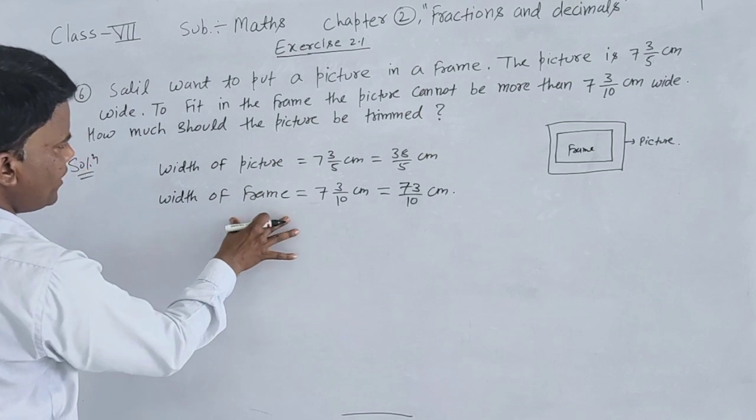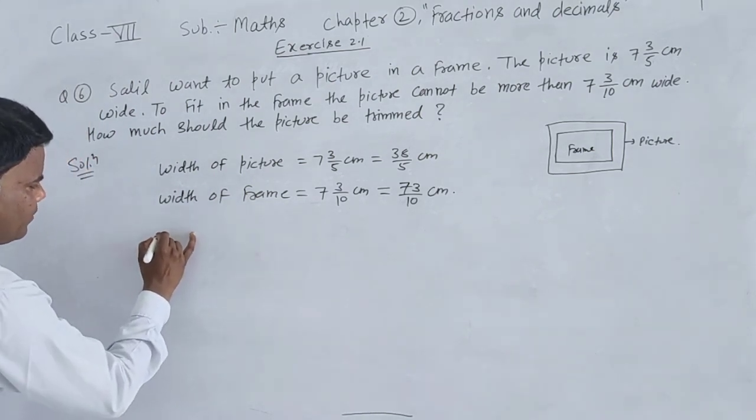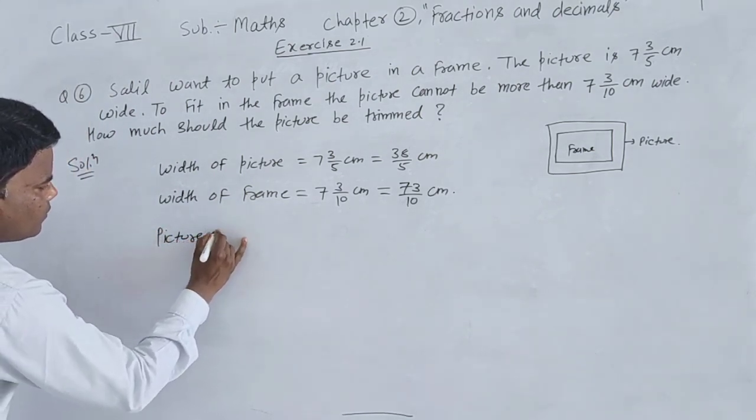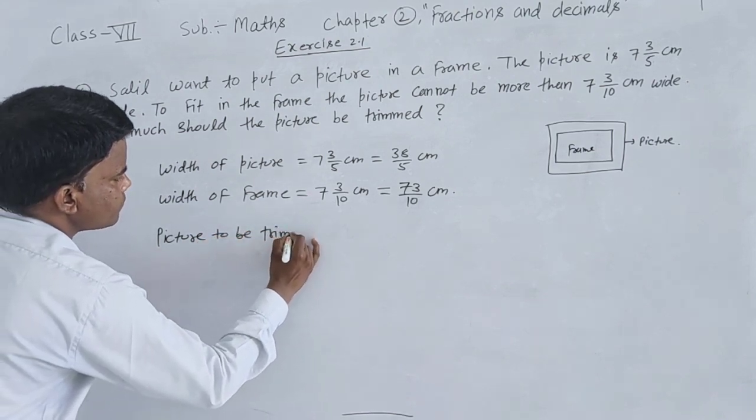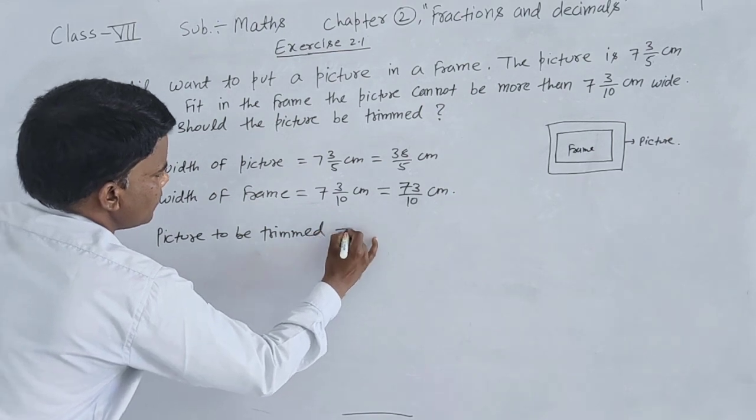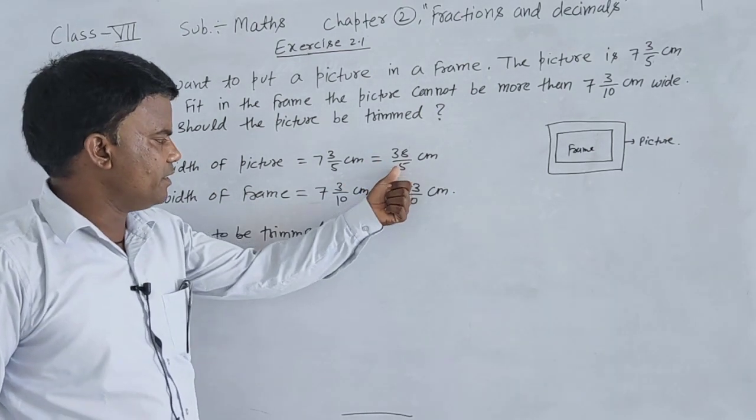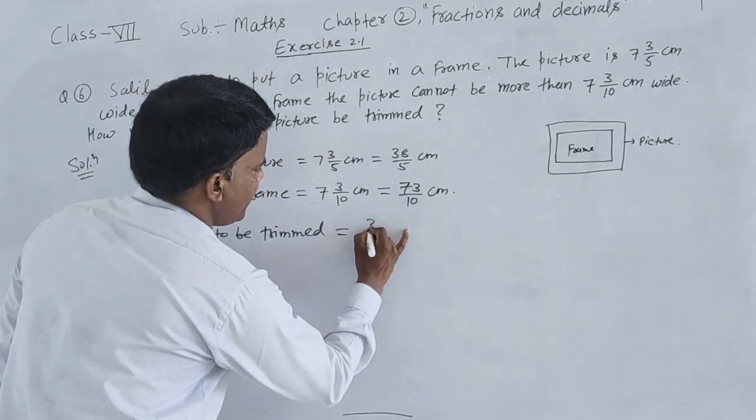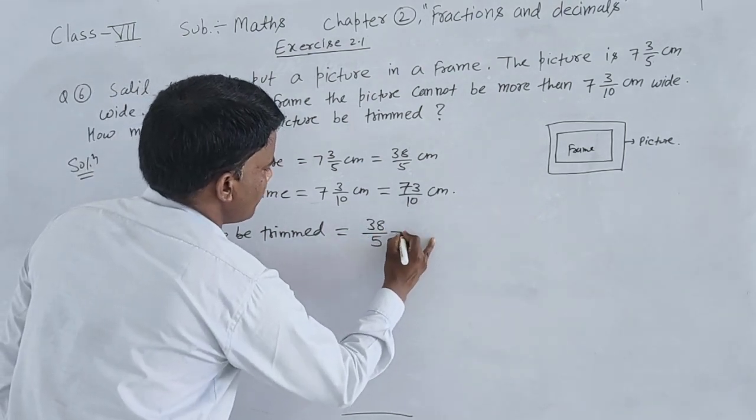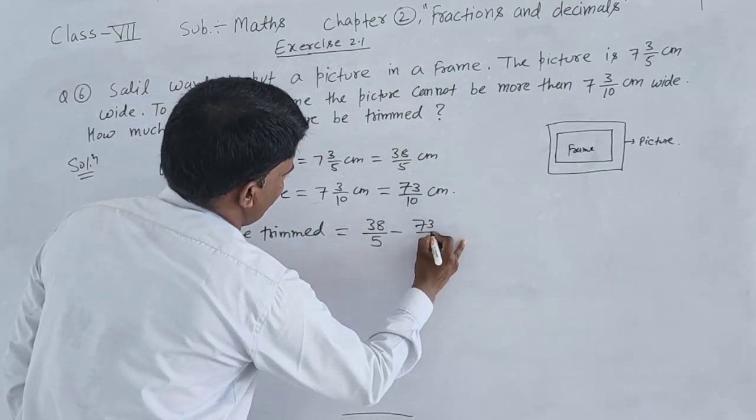Now, picture to be trimmed equals width of picture minus width of frame, which is 38/5 minus 73/10.